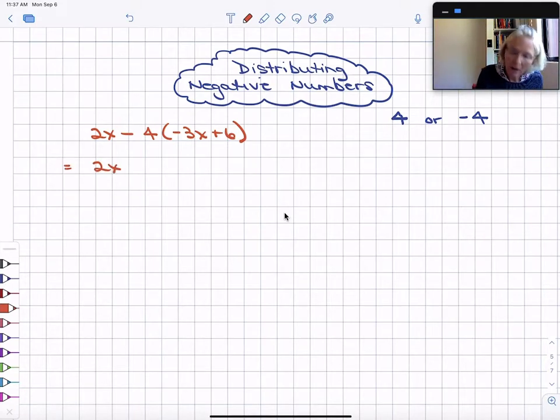So instead of subtracting four, I'm going to add the opposite of four, or add negative four times the quantity, negative 3x plus six. As soon as I write it like this,